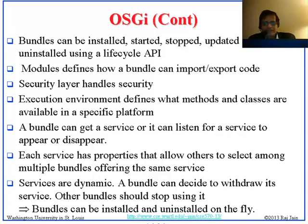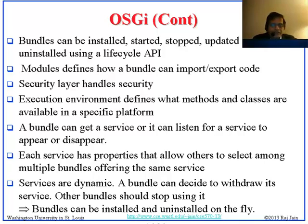The bundle can get the service or listen for the service. The service has properties that allow others to select among multiple bundles offering the same service. You specify the services and say, I need this service which should have these parameters. There may be many services with the same parameters and you get a set, or you can narrow it down by specifying more parameters.